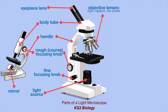Here we have high, medium, and low power objective lenses. Maybe you can remember this by 'object' — the sample you're looking at is the object, so the objective lens is near the sample. This is called the stage, where you're going to put your samples. And here we have clips, which hold the sample down onto the stage.